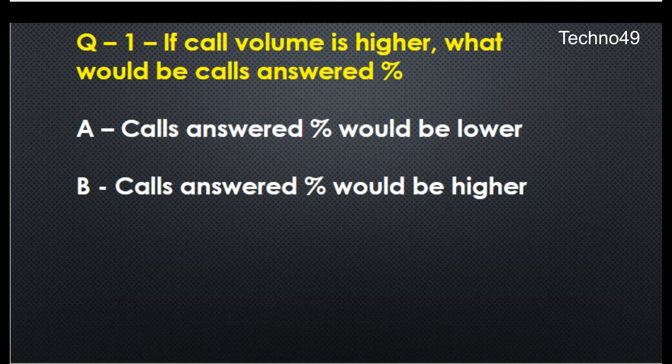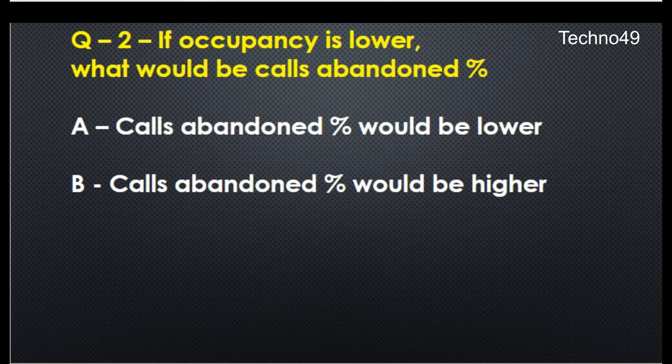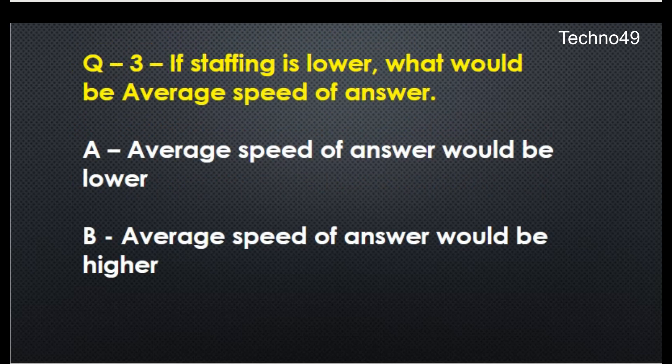The second question: if occupancy is lower, what would the call abandoned percentage be? A: call abandoned percentage would be lower, or B: call abandoned percentage would be higher. Question number three: if staffing is lower, what would the average speed of answer be?